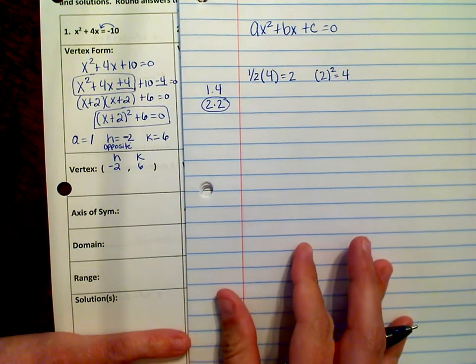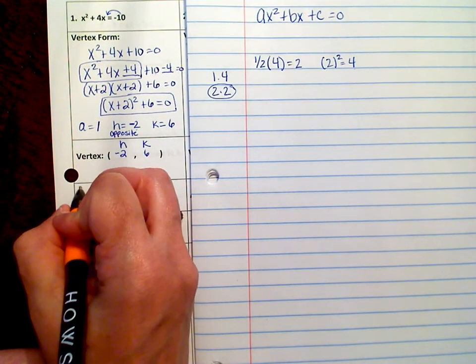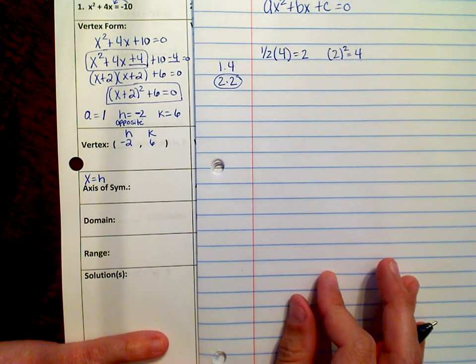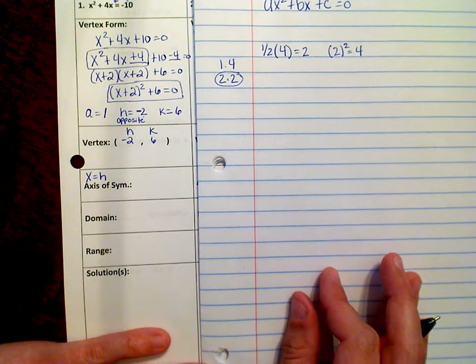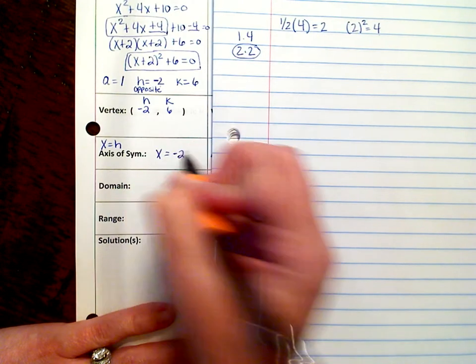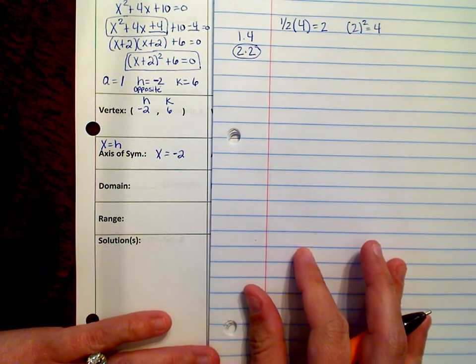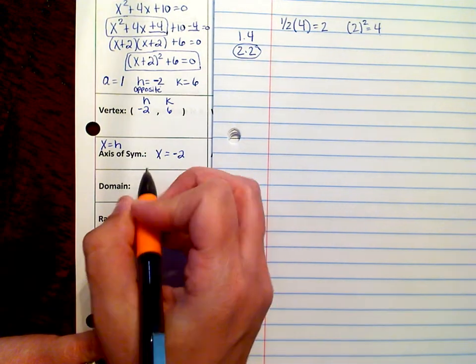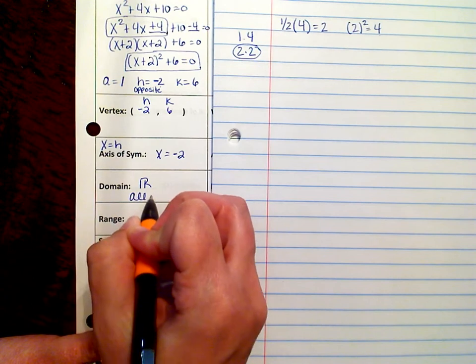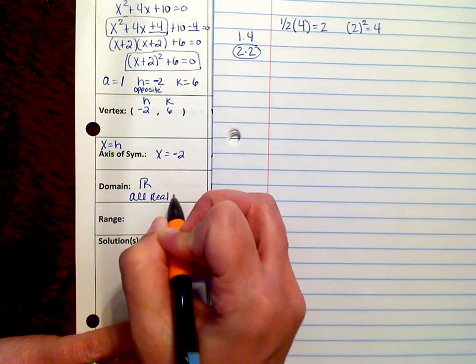Axis of symmetry, remember the axis of symmetry is always x equals h. So since h is negative 2, this is going to be x equals negative 2. And the easiest problem on the whole test is the domain is all real numbers. And you can use the symbol, or you can write it out, all real numbers.